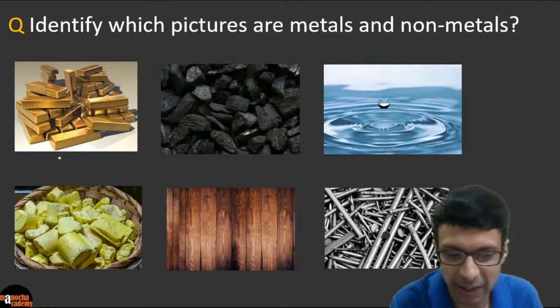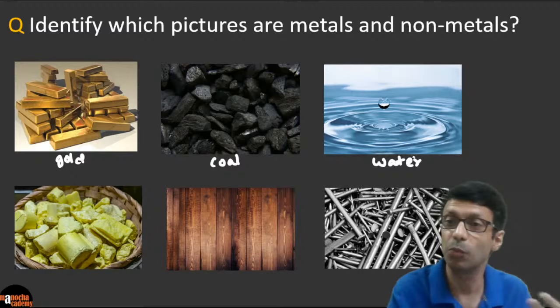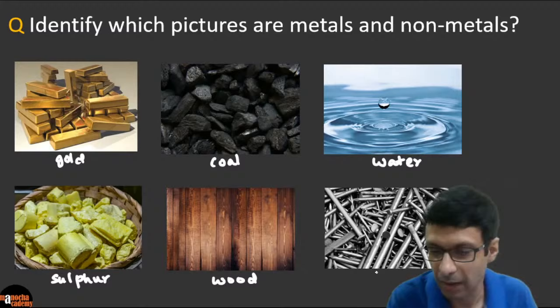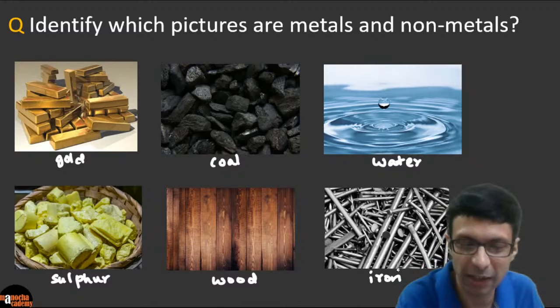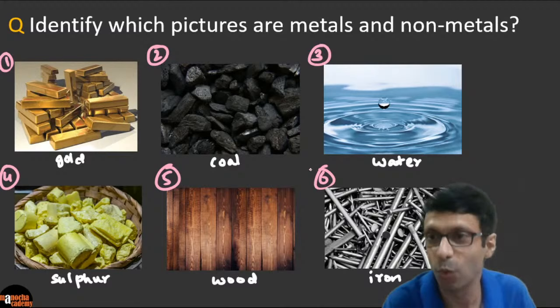In this picture there's gold, here you can see some coal, this is water, and this is sulfur. Here's a picture of wood and these are iron nails. Let's number them: one, two, three, four, five, and six.